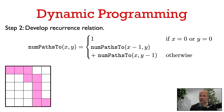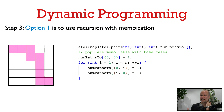We've now developed our subproblems and a recurrence relation among them. Step three is to actually solve the problem. As mentioned previously, we have two options. The first is the top-down recursive approach using memoization, where we store the answers to subproblems we've already computed.